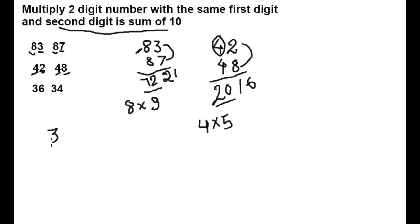Let's take 36, 34. Multiplication of last digit, 24. Multiplication of first digit with next higher number is 12.